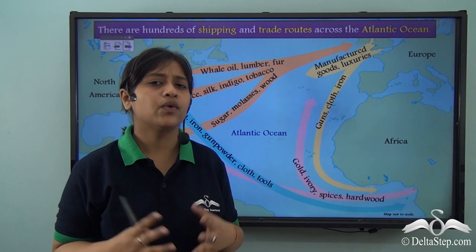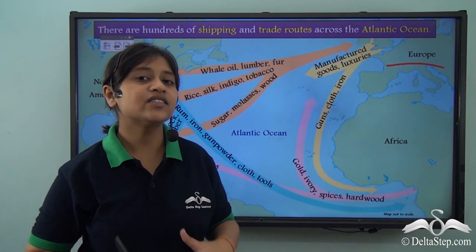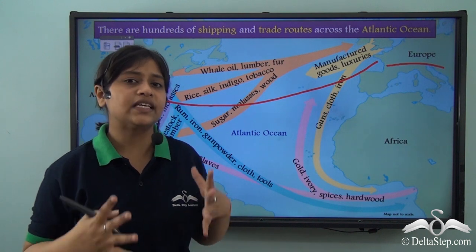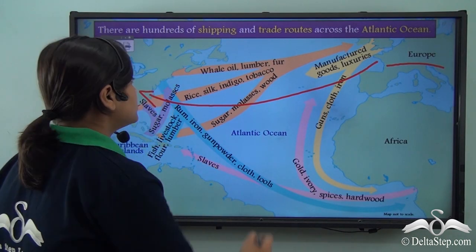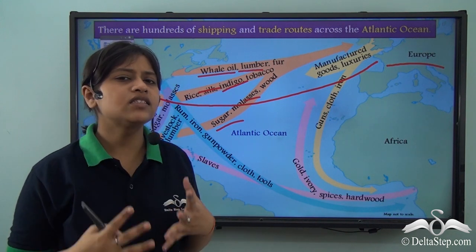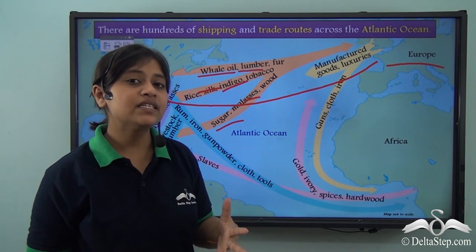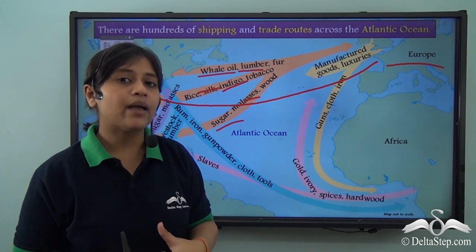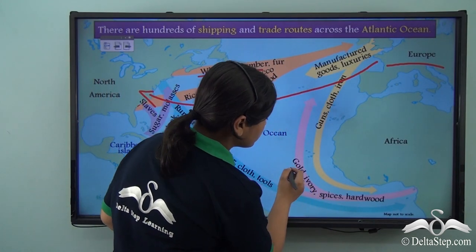Why is the Atlantic Ocean so busy? Many years ago, Europe spread its colonies all over the world. When it came to North America, it had taken away a lot of raw materials at very cheap prices. These raw materials included whale oil, lumber, fur, silk, indigo, sugar, and many others. They used modern machines and equipment to manufacture these into goods, then came back and sold them at a higher price, earning profit.